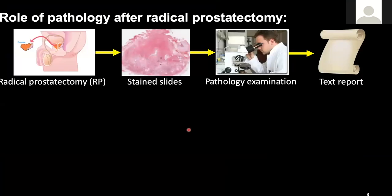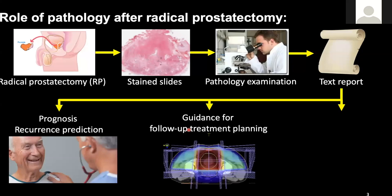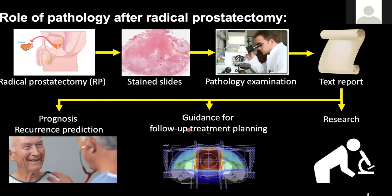Here shows the background of the radical prostatectomy. It's a surgery that removes the entire prostate and the tissue is being kept and stained with hematoxylin and eosin, put on the microscope for pathology examination which generates the text-based pathology report. The report is read by referring physician for prognosis and predicting recurrence for the patient, and it can also be used for the guidance of follow-up treatment as well as pathological research.